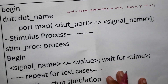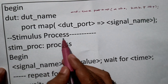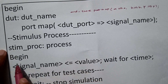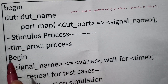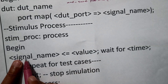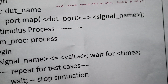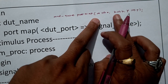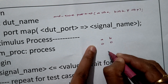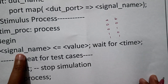After the port map initialization of the design under test, we go straight to the stimulus process. We write 'process' to start the stimulus. Inside the process, we assign a signal name, its value, and a 'wait for' time duration. For two input signals A and B, there are four test cases: we can give 0-0, 0-1, 1-0, and 1-1.